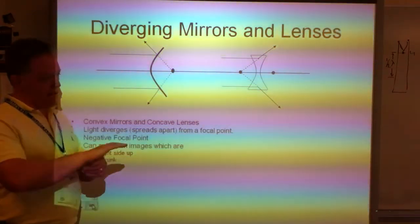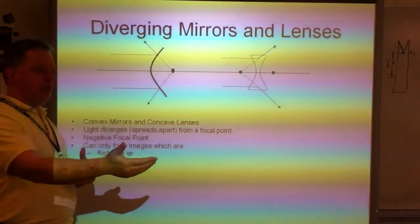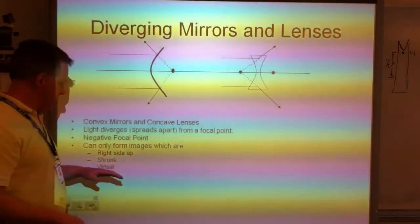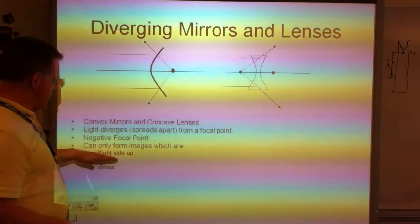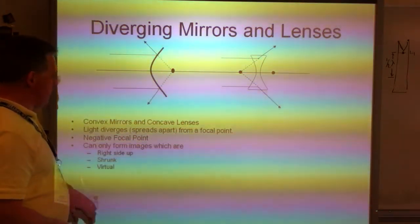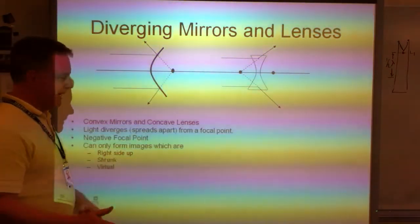It's different. When I had the concave mirror, I could make upside-down images, I could make right-side-up images, and I could make real or virtual. With these, they're always going to be right-side-up, small, and virtual. So they're going to be a little bit easier.